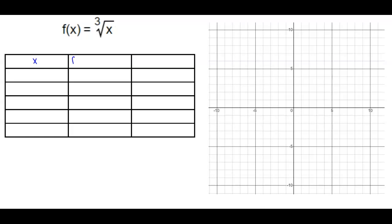So we want to find f of x, which is going to equal the cube root of x. That's going to give us the ordered pair x, f of x, where f of x is the same as the y coordinate. So let's go ahead and pick perfect cubes. Negative 8 is a perfect cube.